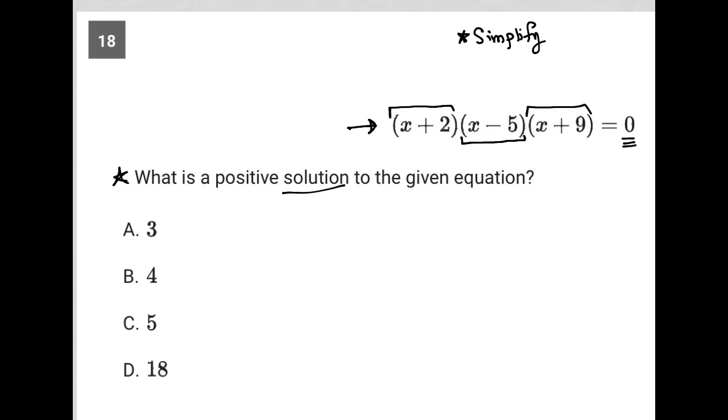The way that you solve for the product of binomials equal to zero is to set each individual binomial equal to zero. So I'm going to do that. X plus two equals zero. X minus five equals zero. And I'll put over here, X plus nine equals zero.